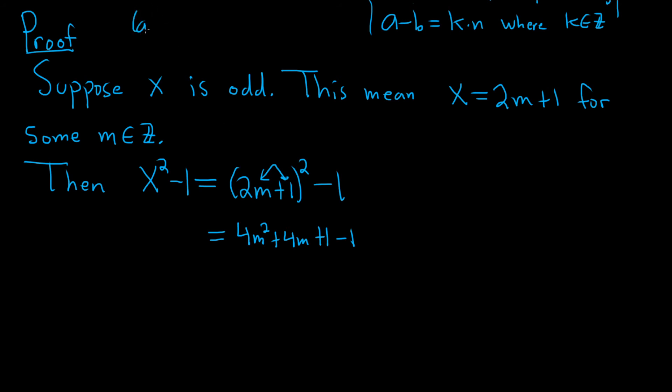I'll do it out here outside of the proof. Remember a plus b squared: you square the first one, you multiply the a and the b and you double them, and then you square the last one. So I just applied that here to the 2m plus 1.